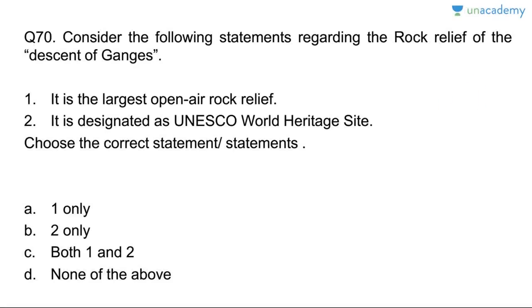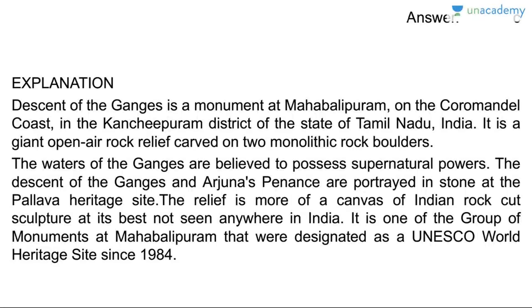Question seventy: the Rock Relief of the Descent of the Ganges. It is the largest open-air rock relief — correct. It is a UNESCO World Heritage Site — correct. Answer is C, both one and two. The Descent of the Ganges is a monument at Mahabalipuram on the Coromandel Coast in Tamil Nadu. It is a giant open-air rock relief carved onto monolithic boulders. The descent of the Ganges and Arjuna's Penance are portrayed in stone at this Pallava heritage site, a UNESCO World Heritage Site since 1984.